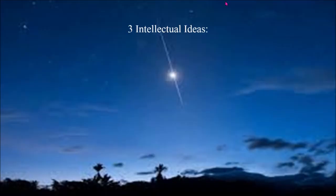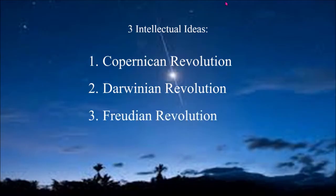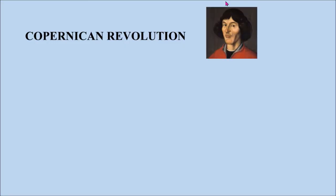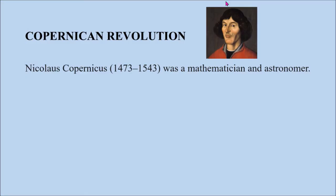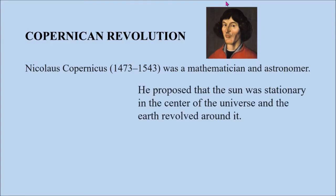We will be discussing three intellectual or scientific ideas revolution: the Copernican revolution, Darwinian revolution, and the Freudian revolution. The Copernican revolution: Nicholas Copernicus, 1473 to 1543, was a mathematician and astronomer. He proposed that the sun was stationary in the center of the universe and that earth revolved around it.